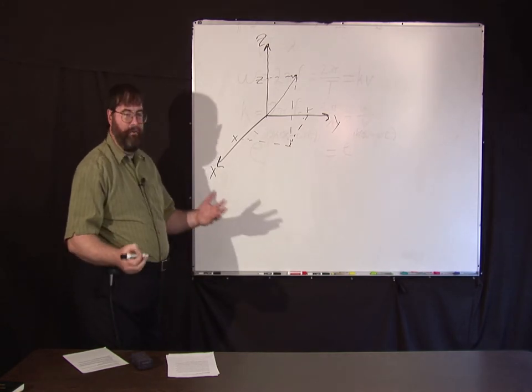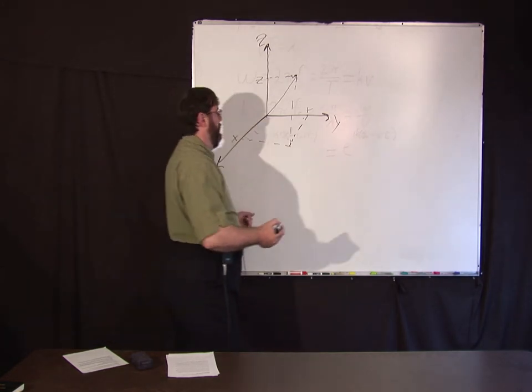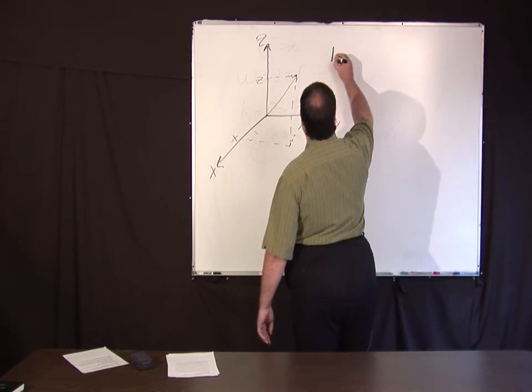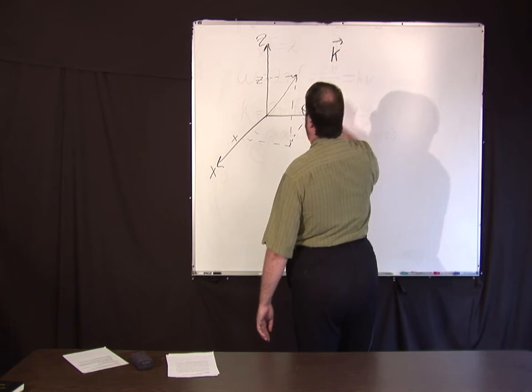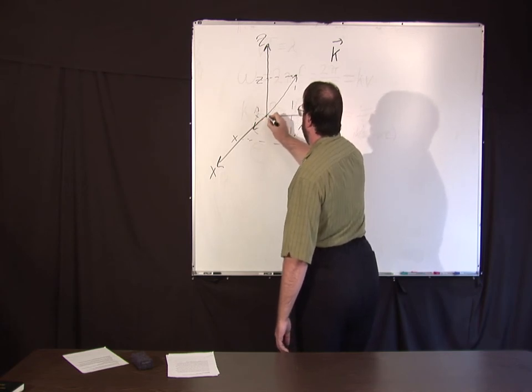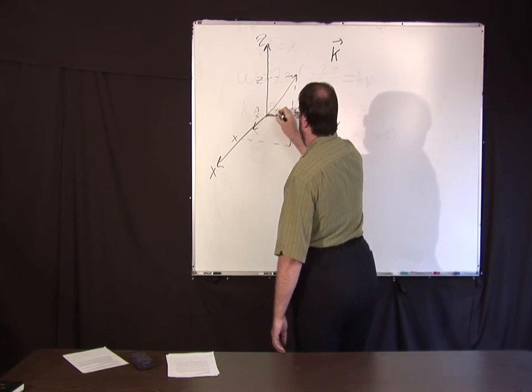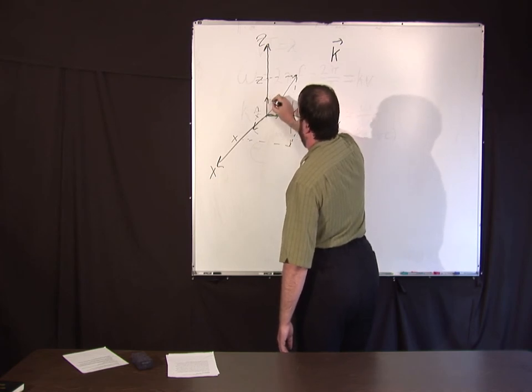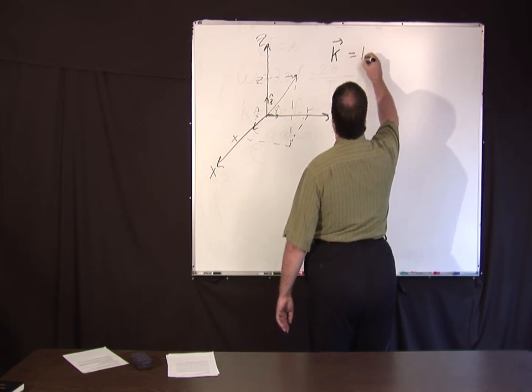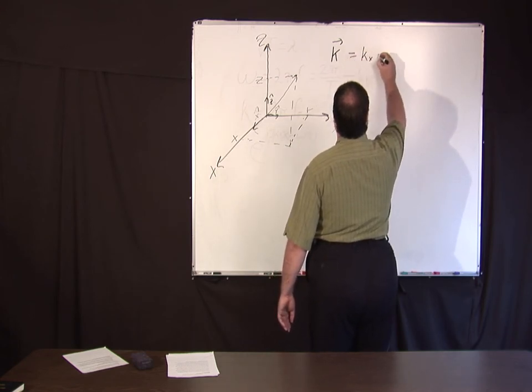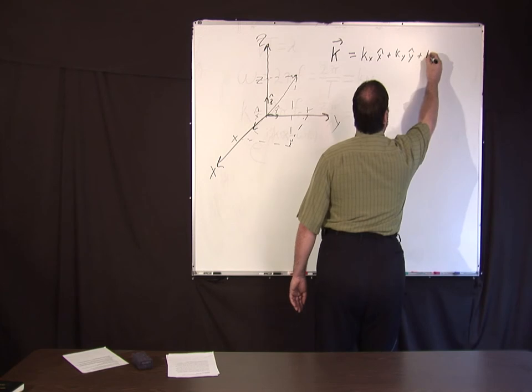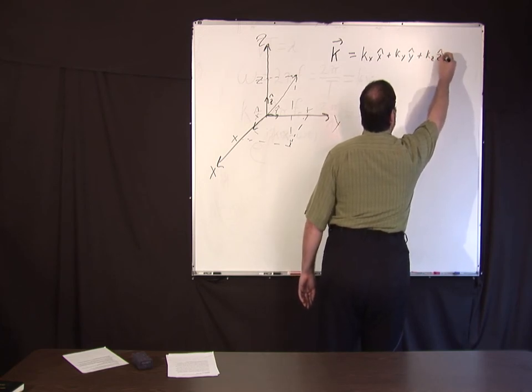So in general, a three-dimensional wave propagates in a direction. The wave vector is a vector k. Now if you pick three directions, one along the x hat, along this direction y hat, and along the z direction z hat, in general the wave vector k equals kx x hat plus ky y hat plus kz z hat.